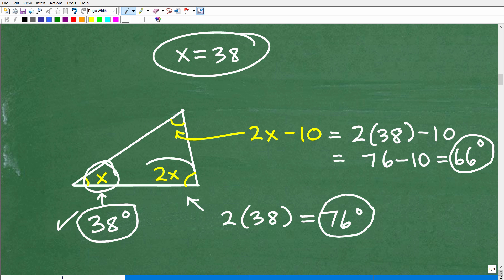All right. Pretty simple here. This angle is 2x. So what's that going to be in terms of this actual angle? Well, it's 2 times x, or 2 times 38, and that would be 76 degrees.